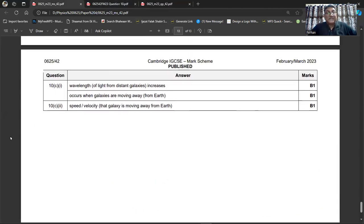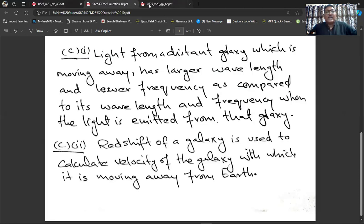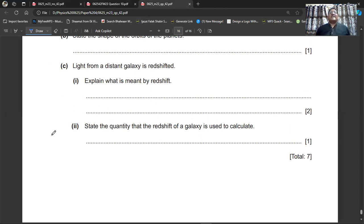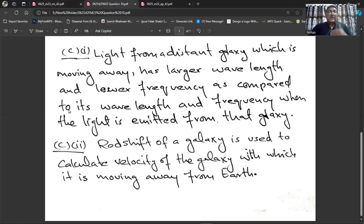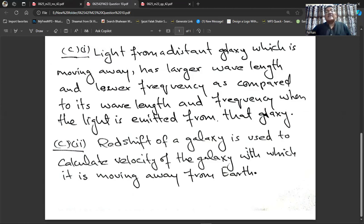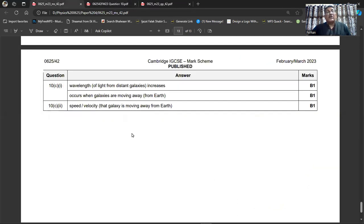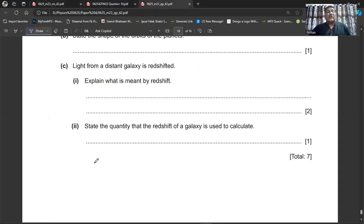Look at the marking scheme here. Wavelength of the light from distant galaxy increases, occurs when the galaxies are moving away from the earth. Those galaxies are moving away. That's why this is happening. Light from a distant galaxy is red shifted. Part C second says state the quantity that the red shift of a galaxy is used to calculate. The red shift is used to calculate velocity of the galaxy with which it is moving away from the earth. You can look at the marking scheme.